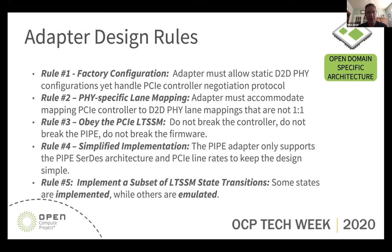We spent a lot of time in our work group, going over and over the rules we wanted to abide by. Rule number one: factory configuration. We're often talking about the BOW PHY as an example D-to-D PHY. We want something that's very low power, very simple to configure, and doesn't require a lot of logic complexity — able to statically configure that D-to-D PHY. And yet the PCI controller has all sorts of link negotiation protocols as part of bring-up, so the pipe adapter has to handle that.